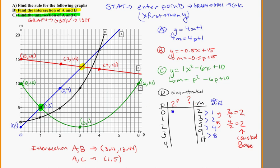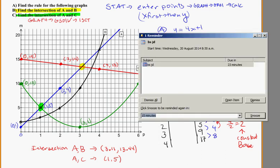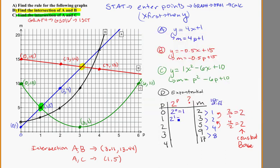So, 2 to the power of 0 is equal to 1, 2 to the power of 1 is equal to 2, 2 to the power of 2 is equal to 4, 2 to the power of 3 is equal to 8, and 2 to the power of 4 is equal to 16.